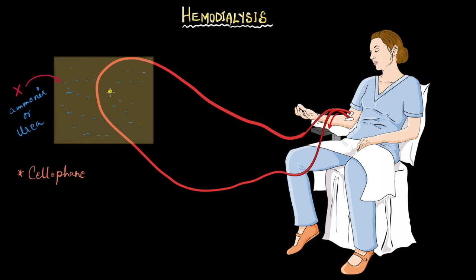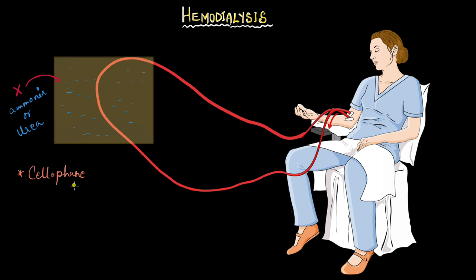As the tube is permeable, all the substances that are in excess in the blood will slowly diffuse out into the chamber. They will move along their concentration gradient. So all the substances that are in excess will move out - like urea, ammonia, and excess ions. Toxins, everything that is in excess inside will move out.